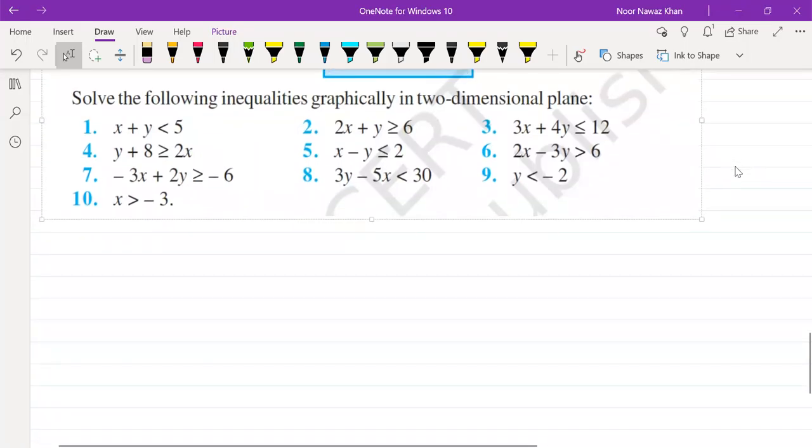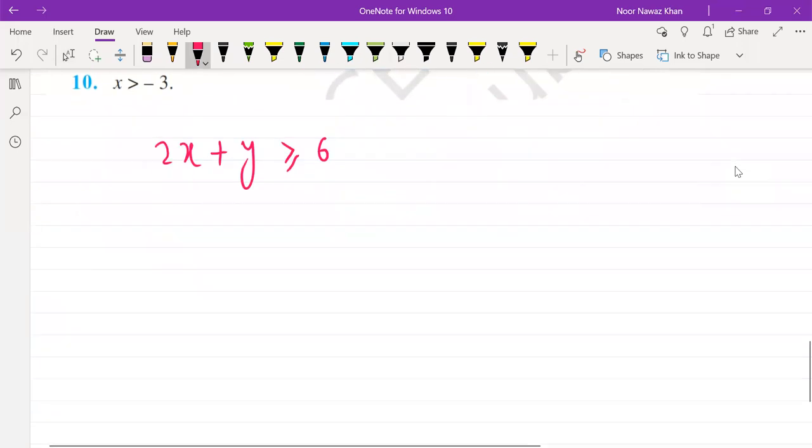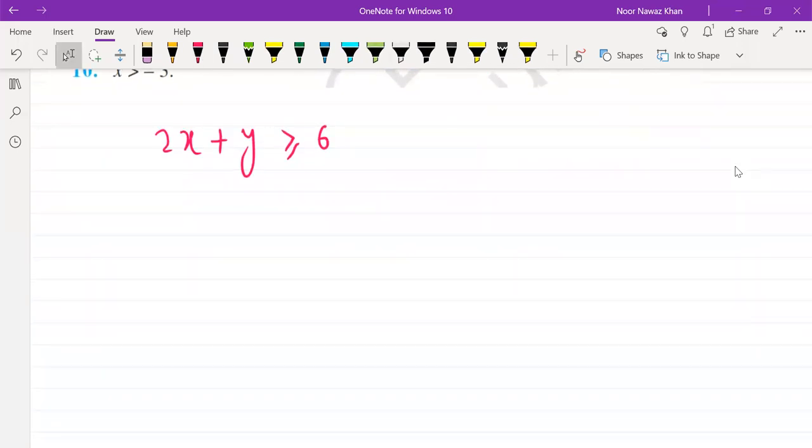So we have 2x plus y is more than or equal to 6. I will solve this with you. I will take 3 steps. First we have to draw a graph, second we have to check, and third we have to plot.